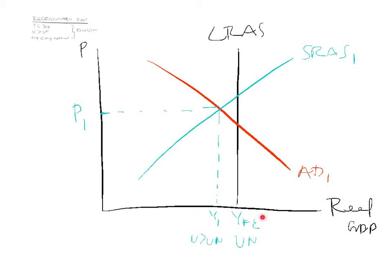As mentioned in the previous example, this short-run equilibrium is unsustainable — we must always end up in our long-run equilibrium. So let's graph that. But how do we go from a recession back to our full employment level of output?